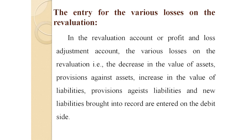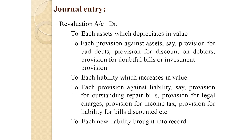The first entry is for the various losses on revaluation. In the revaluation account or profit and loss adjustment account, the various losses on revaluation — that is, the decrease in the value of assets, provisions against assets, increase in the value of liability, provisions against liability, and new liabilities brought into record — are entered on the debit side of the revaluation account.